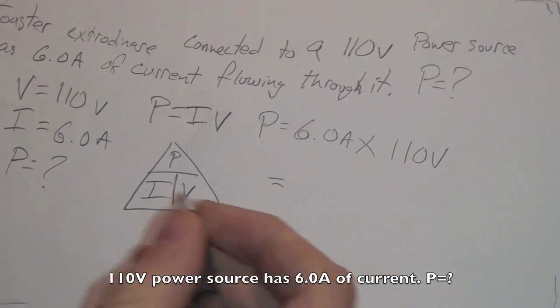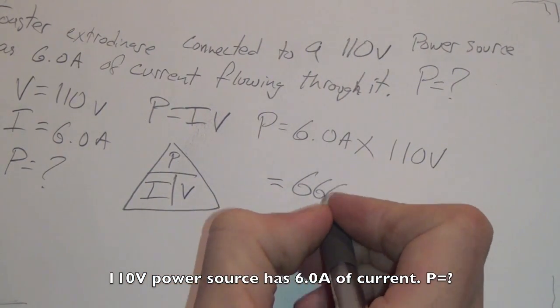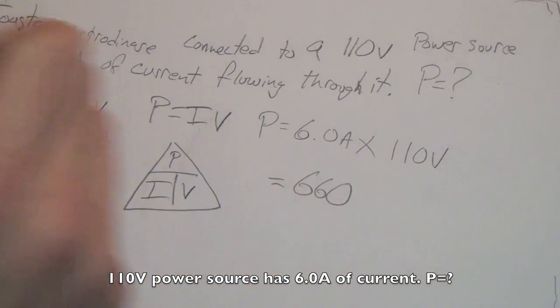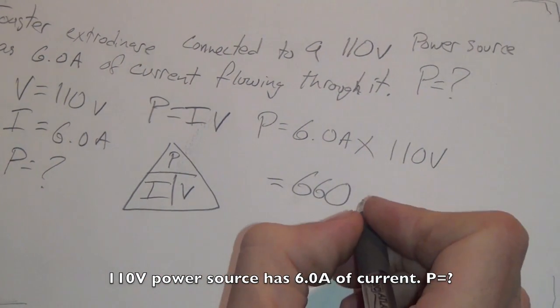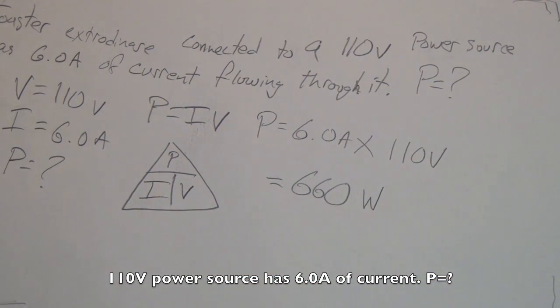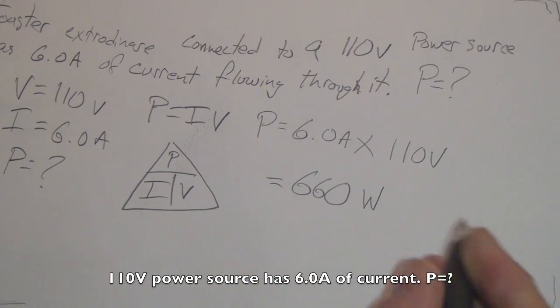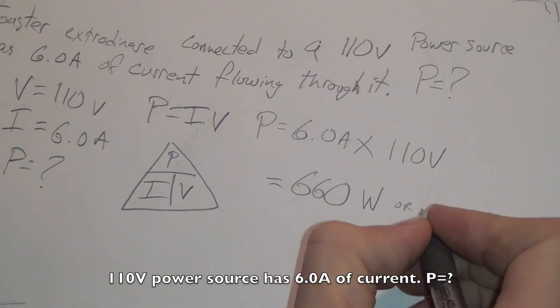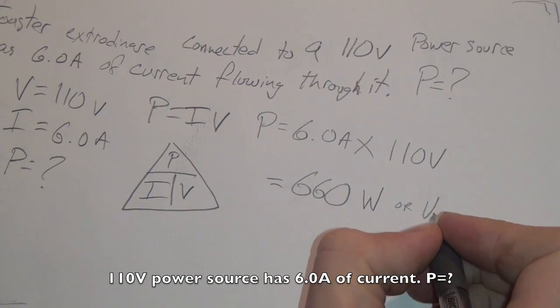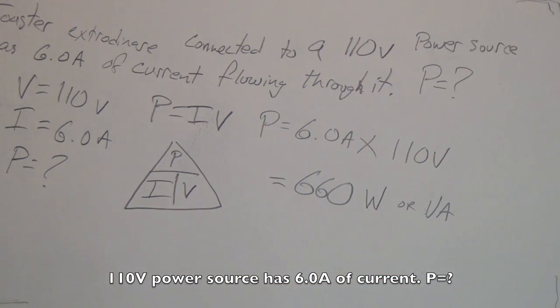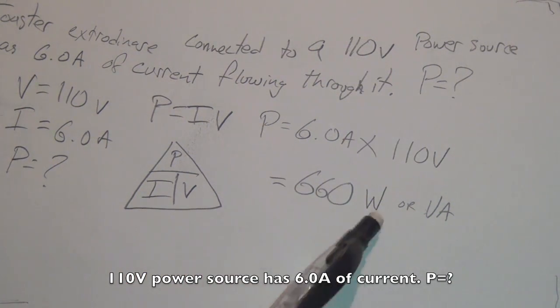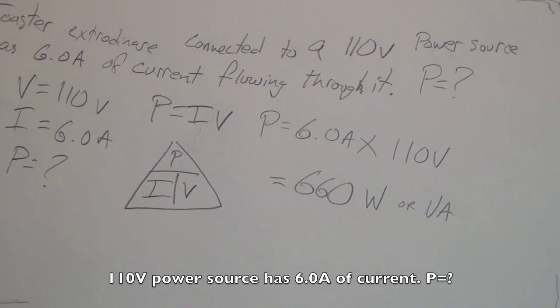So P equals I times V, 6.0 amps times 110 volts. Using your calculators or your mind or whatever, you'll get 660. Now, power is what? Power, we already know that power is measured in watts. You understand that? Or we also have it, volts amps is also another unit if you want. Volts times amps equals watts. Power is in watts. So the answer is 660 watts. Alright?